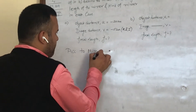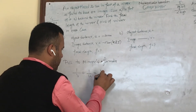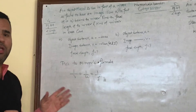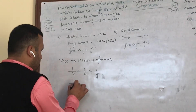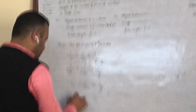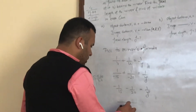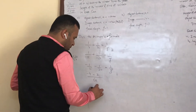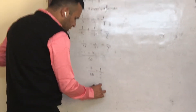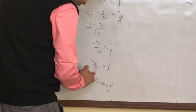According to the mirror formula: 1/v + 1/u = 1/f. Here u = object distance, v = image distance, f = focal length. Put v = -15 and u = -20. We need to find focal length. Taking LCM of 15 and 20, which is 60: 60/15 = 4 and 60/20 = 3, so (-4 + (-3))/60 = -7/60 = 1/f. Taking reciprocal, f = -60/7, which is approximately -8.6 cm. Since the image is real and inverted, f is negative.